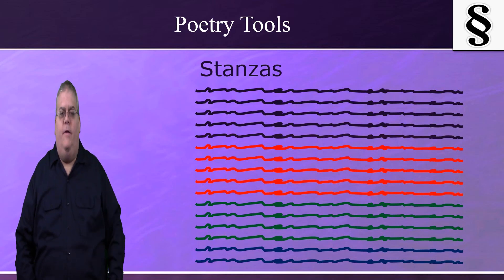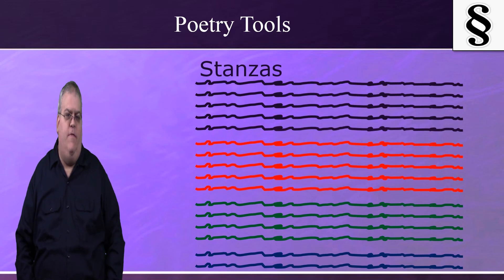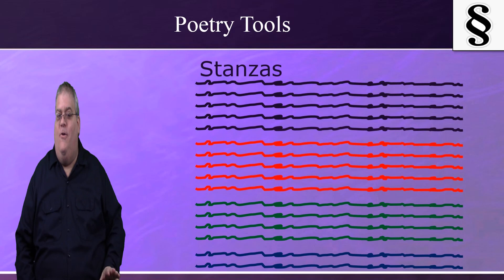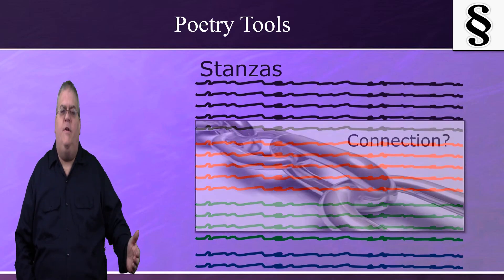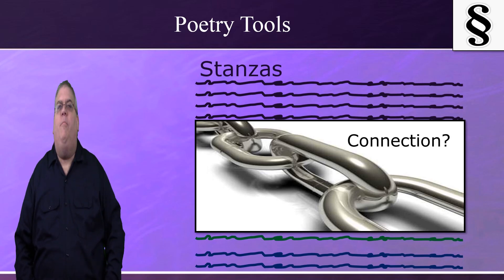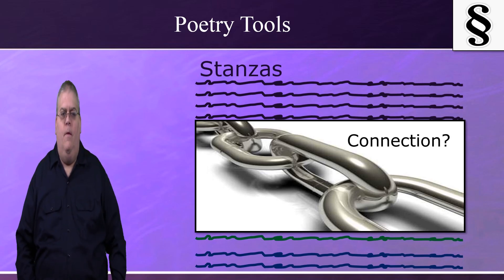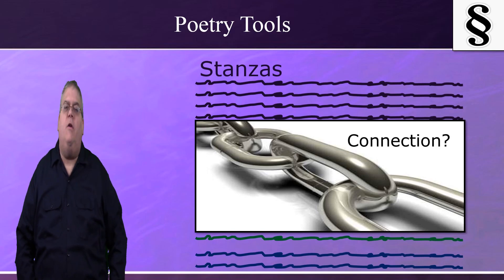Modern translations usually break up stanzas by printing a larger gap between them, and this can be very helpful. But the modern editors are not infallible, so double-check their divisions for yourself. Once you've divided the stanzas, always ask: what is the connection between them? How do these stanzas fit together? Ask yourself what the flow of thought of the poem as a whole is, how it moves from one idea to the next, and what the author was trying to communicate by this.